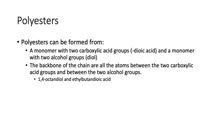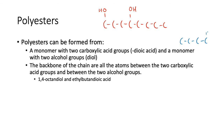Now let's look at a more complex example: 1,4-octanediol and ethylbutanedioic acid. Let's draw out the two monomers. 1,4-octanediol has carbons 1 through 8, with alcohol groups at positions 1 and 4. Butanedioic acid runs 1,2,3,4 with an ethyl group attached — it doesn't matter which side it's drawn on since it will end up on carbon 2 effectively. Those are our two monomers.